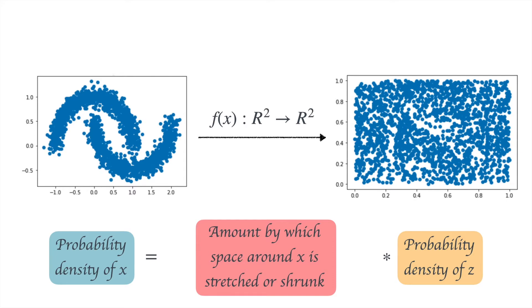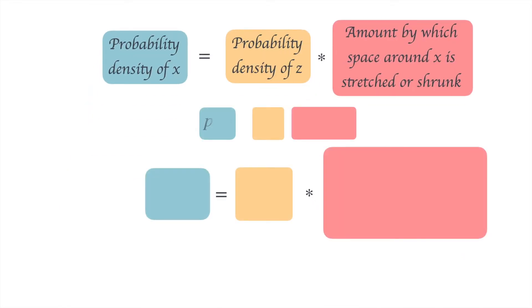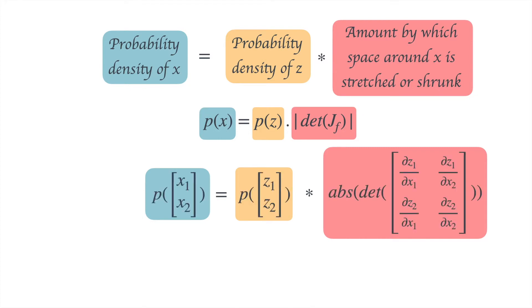As usual, a brief recap of the things we have done so far. In the last video we saw the relationship between probability density of X and probability density of Z, where Z is f of X, and it is given by P of X equals P of Z times the absolute value of the determinant of Jacobian of the function f which maps X to Z.